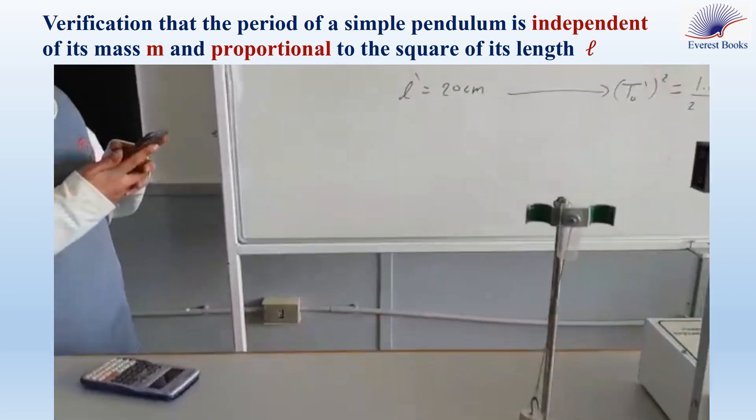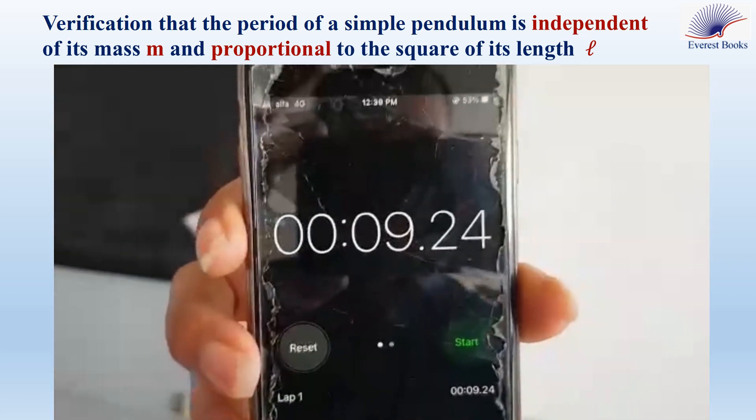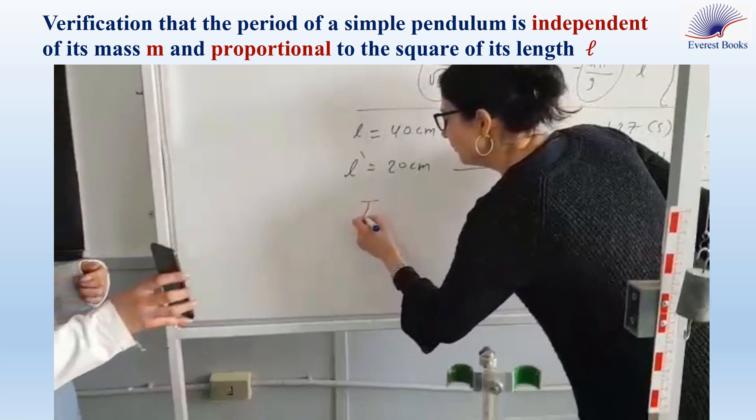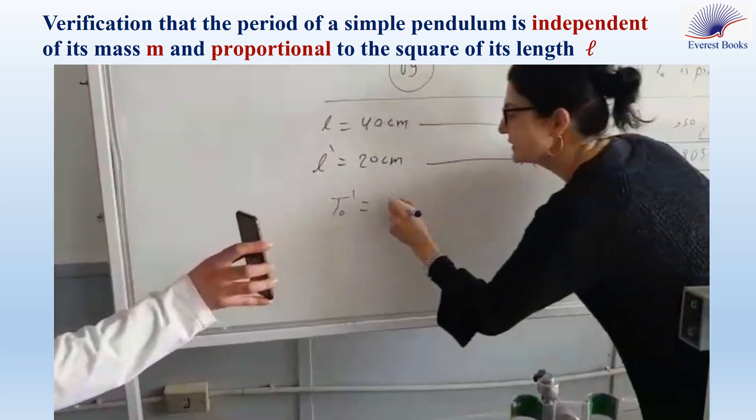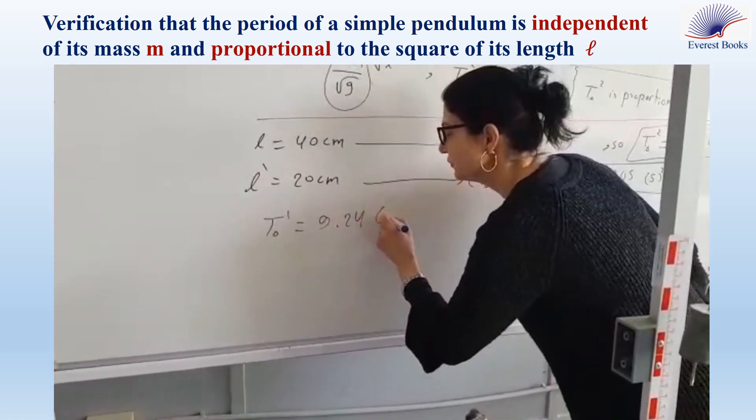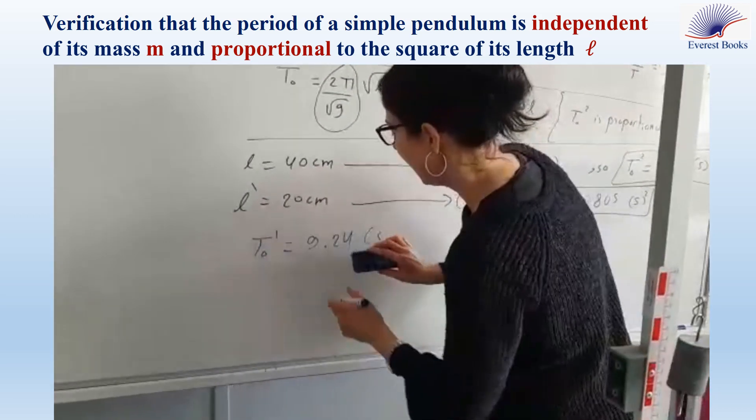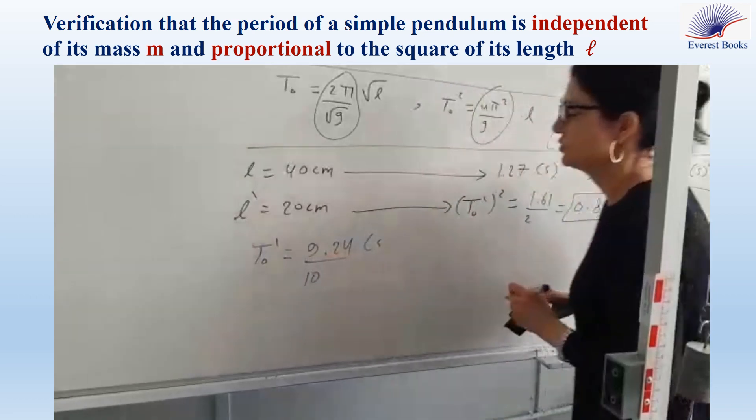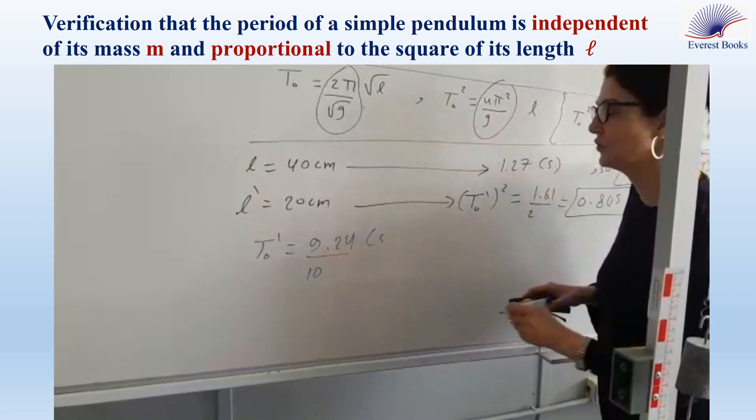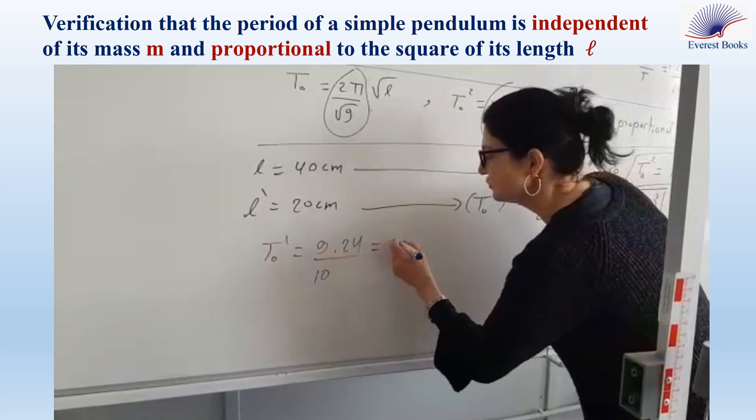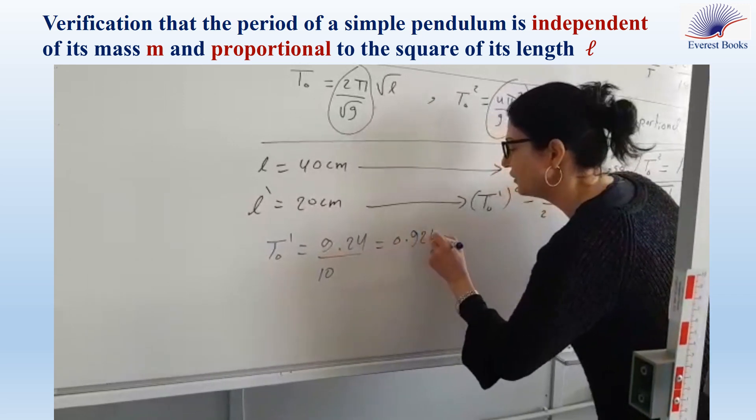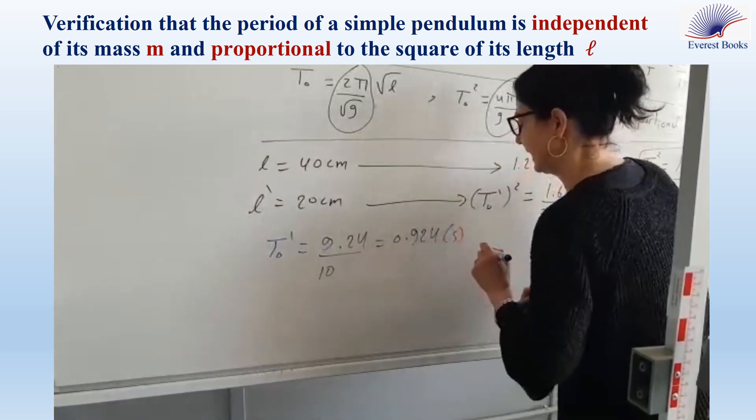It's 9.24. So, the new period is... This is the time for 10 oscillations over 10. So, it is 9.24 over 10 seconds, which is equal to 0.924 seconds.